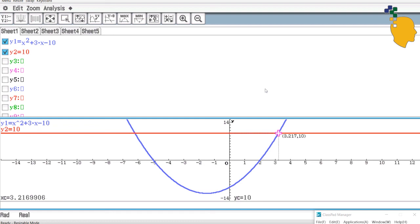And again, if you want to find the right intersection, just simply click onto the right arrow and it'll give you the right intersection. So when x is 3.217, your y-value is 10 as well.